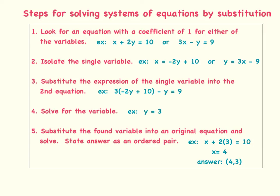Now I can move to the fourth step, which is to solve for the variable y. In our example, y equals 3. Now we can move on to the fifth step, which is to substitute the found variable into an original equation and solve, and then state your answer as an ordered pair. Our found variable was y equals 3, so I can take that 3 and substitute it for y in the first equation. So I have x plus 2 times 3 equals 10. When I solve for x, I know that x equals 4, and I would write my answer as an ordered pair: (4, 3).